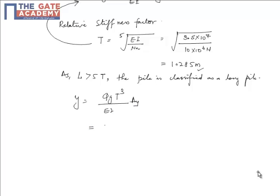So Qg here is 40×10^3 N into 1.285 raised to power 3, divided by 3.5×10^7 Nm^2 times Ay which is 2.435 meter.